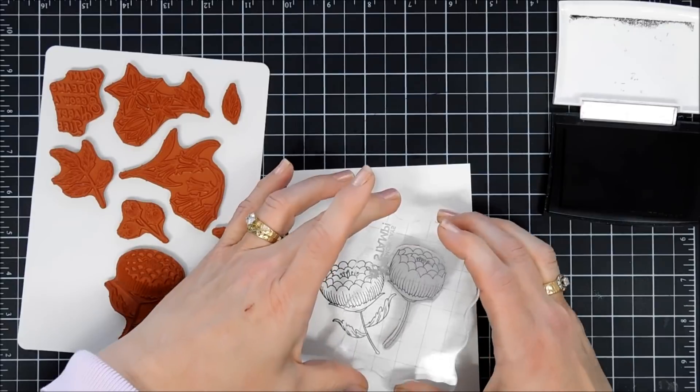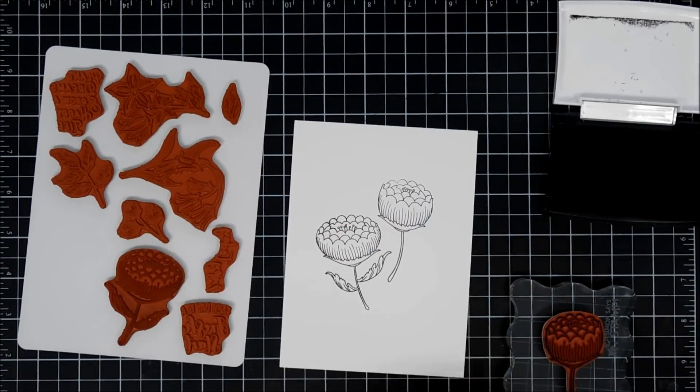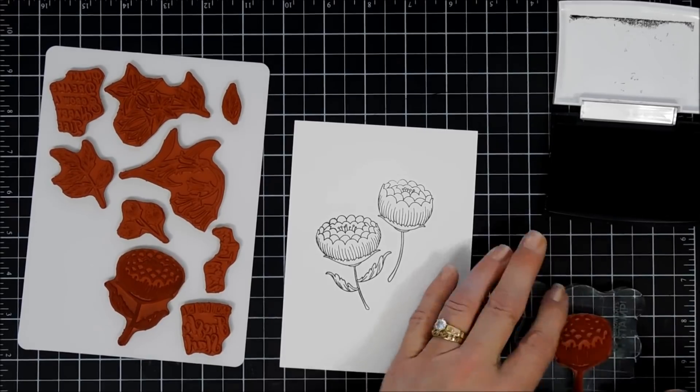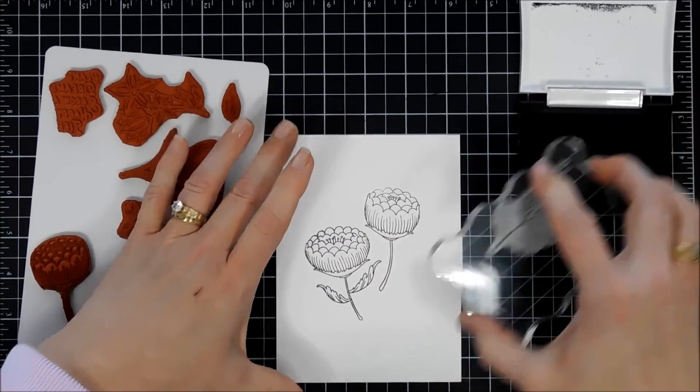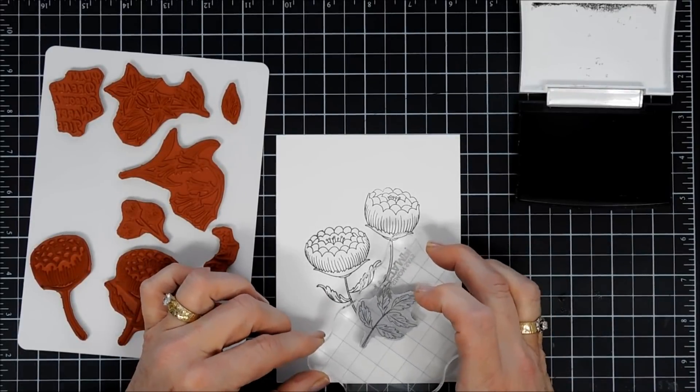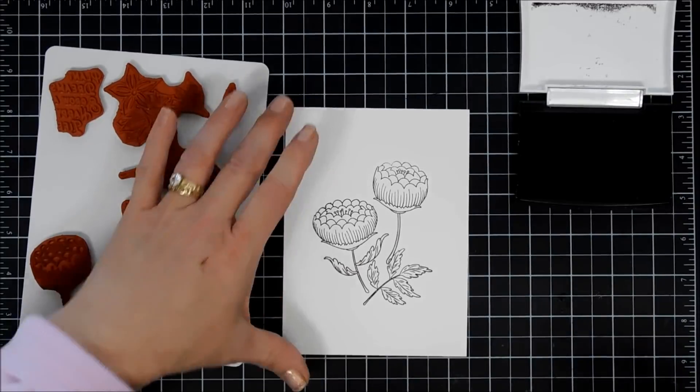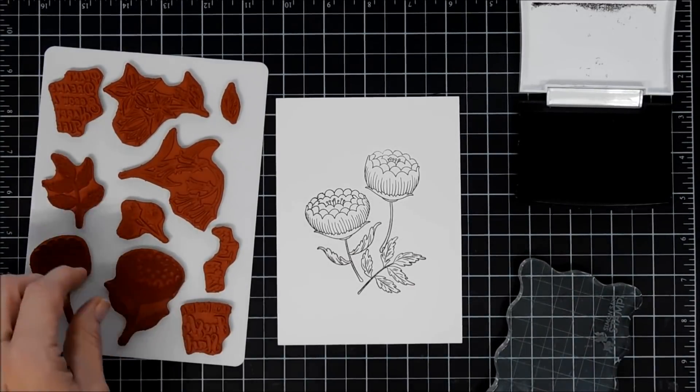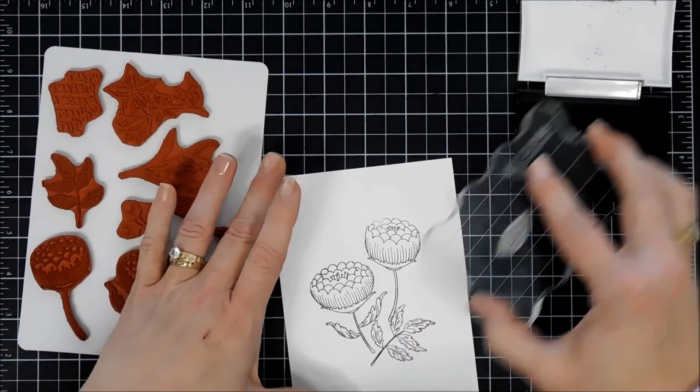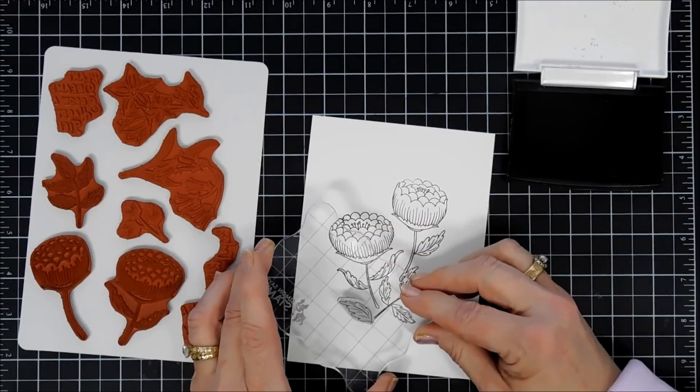The nice thing about this is the leaves are separate. You have one single leaf, and then you have a little leaf cluster. I'll grab the little leaf cluster and stamp that as well. You could do masking and create a better image, but for today's card, I thought where the overlapping is not happening, I can use that placement for my sentiment.